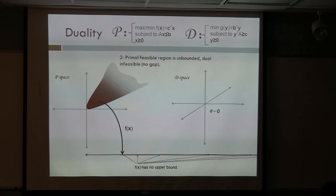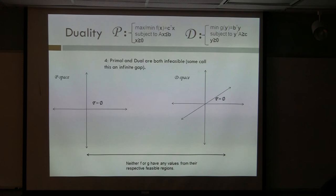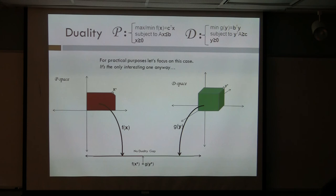If the primal problem is unbounded, then obviously you can't make an upper bound on the problem, so the dual problem has an empty feasible region. Similarly, if the dual problem is unbounded with no lower bound, then there's no feasible region for the primal space. And there's another scenario where both are empty — they say there's an infinite gap there — but I don't really care about those cases.